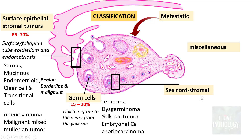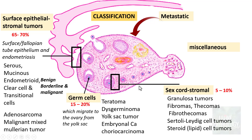Sex cord stromal tumors account for around 5 to 10% of all ovarian tumors. They arise from the sex cord and adjacent stroma of the ovary. Types include granulosa cell tumors, fibromas from fibrous stromal cells, thecomas from theca cells, fibrothecomas, Sertoli-Leydig cell tumors, and steroid cell tumors (also called lipid cell tumors).